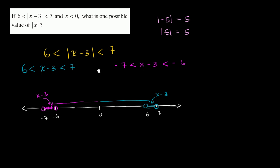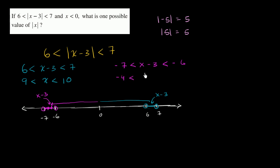To figure out what x would be in each case, we add 3 to all three parts of each inequality. For the first case: 6 plus 3 is 9, so 9 is less than x, which is less than 7 plus 3, which is 10. For the second case: negative 7 plus 3 is negative 4 is less than x, which is less than negative 6 plus 3, which is negative 3.